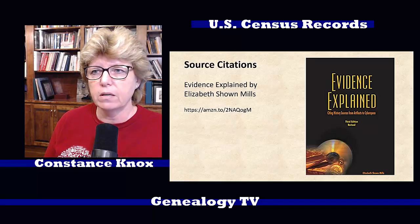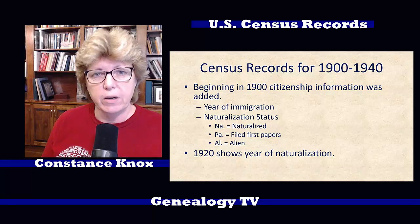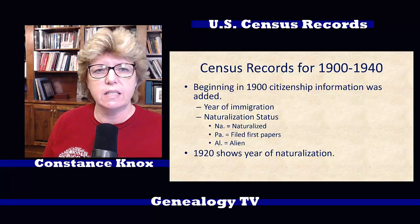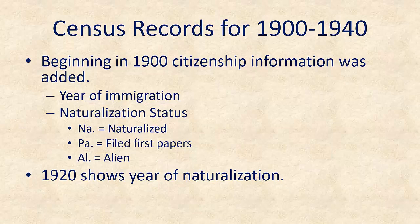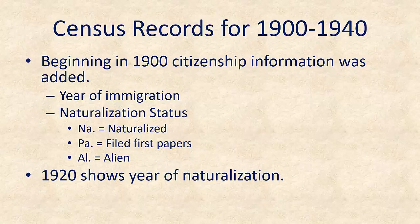Moving on — census records for 1900 to 1940. Beginning in the 1900 census, citizenship information was added: the year of immigration and naturalization status. In the naturalization columns, you'll see NA for naturalized persons, PA for first papers filed. When a person was going to become naturalized, they had to file papers first — and if I recall, they had to have been in the United States at least five years before they could do that. AL was for alien.